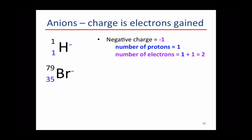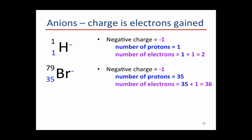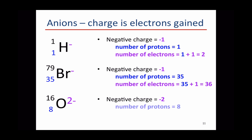A bromine minus also has a negative charge of minus 1. A bromine atom has 35 protons, and if it's neutral, 35 electrons. But a Br- has gained an electron, so it has 35 plus 1 — 36 electrons. Lastly, O2- has a negative charge of minus 2, meaning it's gained 2 electrons. A neutral oxygen atom has 8 protons and 8 electrons, so if it's gained 2 electrons, it now has 8 plus 2 — 10 electrons.